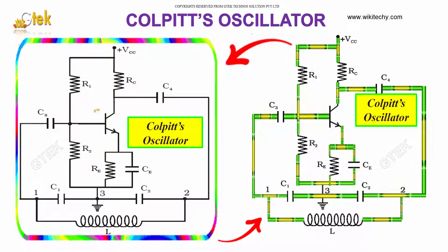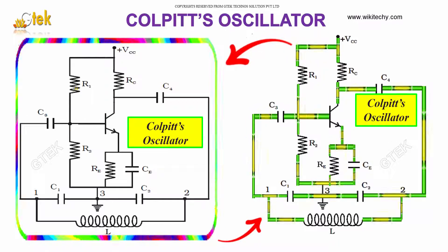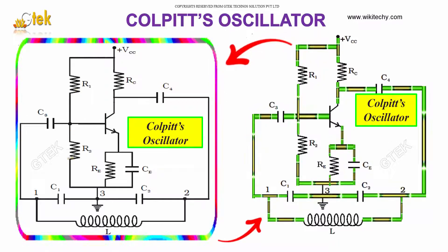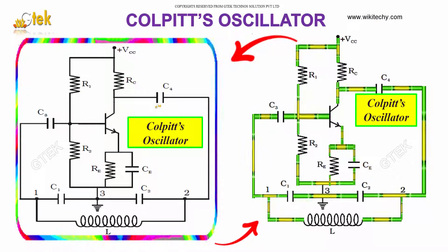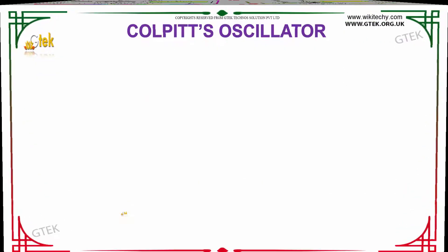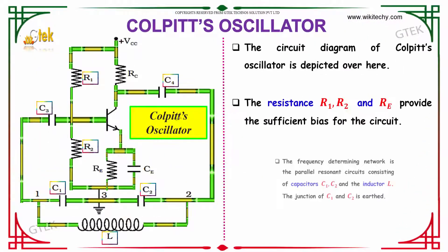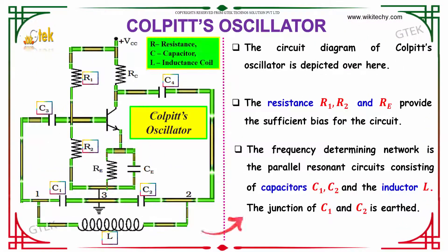You have a transistor here, resistors in parallel, capacitors in series, and an inductor. The circuit diagram of Colpitt's oscillator is shown here.